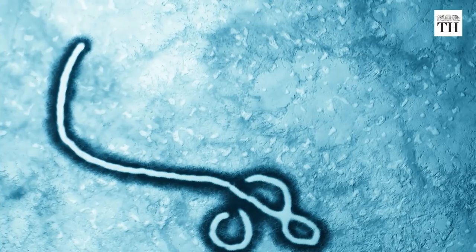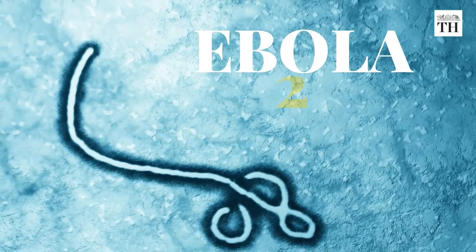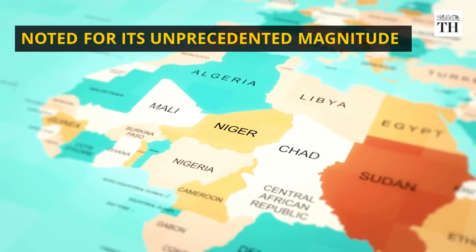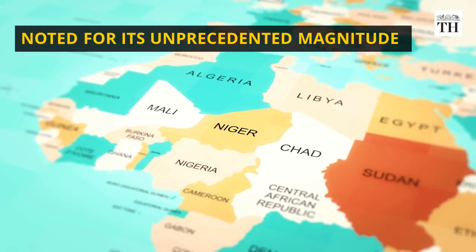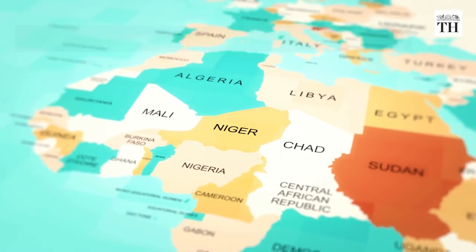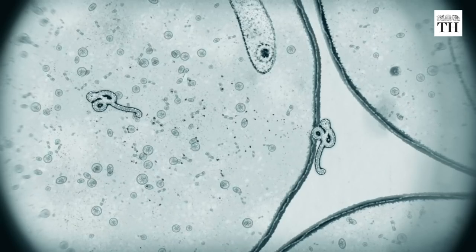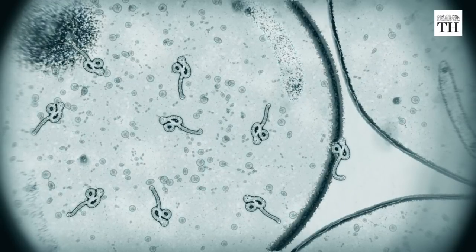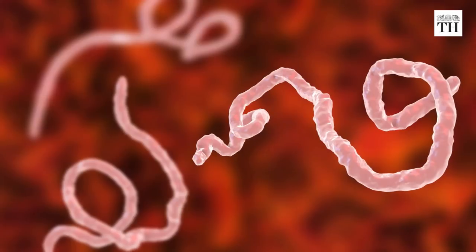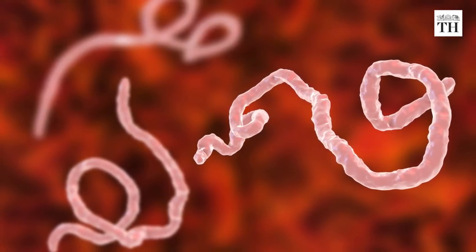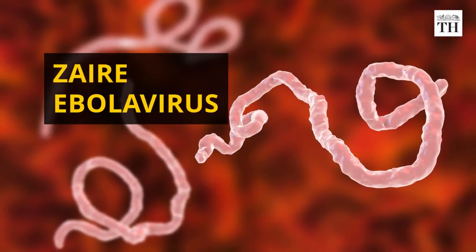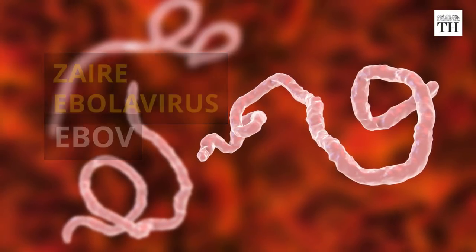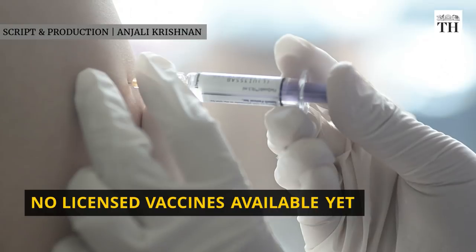The Ebola outbreak of 2014 to 2016 in West Africa was noted for its unprecedented magnitude, with actual numbers of cases and deaths suspected to be far greater than reported figures. The causative virus was a type of Zaire Ebola virus known as EBOV, which is the deadliest of the Ebola viruses. Currently, there are no licensed vaccines to prevent Ebola virus disease.